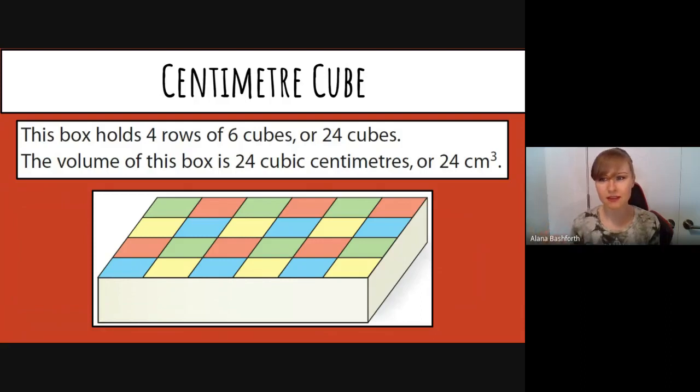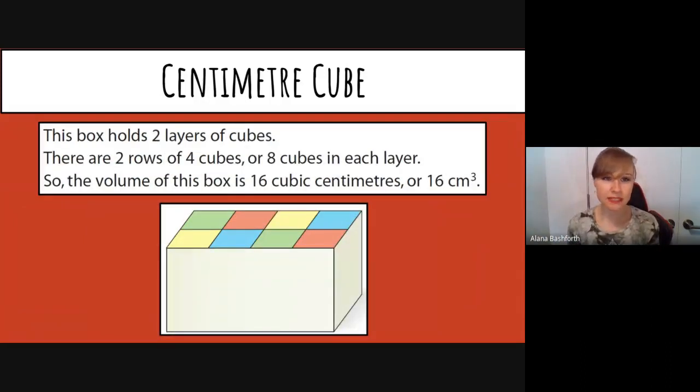This box holds two layers of cubes. There are two rows of four cubes, or eight cubes in each layer. So the volume of this box is 16 cubic centimeters, or 16 centimeters cubed. You can see the top layer and then you need to rely on the information here to know that there's more than one layer.